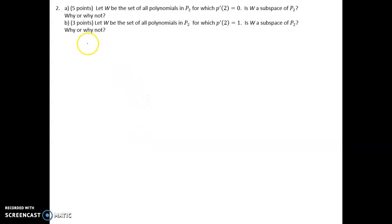Here's another problem from written assignment number four that I wanted to discuss. So part A, well in each part of this, let's say this first, W is a subset of the collection of all polynomials degree 2 or lower, so that's P2.